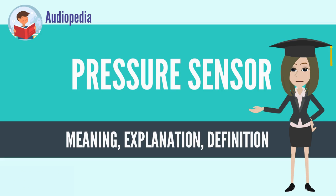There is also a category of pressure sensors designed to measure in a dynamic mode for capturing very high speed changes in pressure. Example applications for this type of sensor include measuring combustion pressure in an engine cylinder or in a gas turbine. These sensors are commonly manufactured out of piezoelectric materials such as quartz.